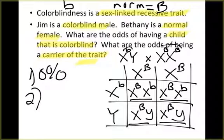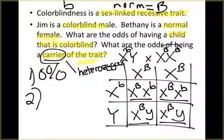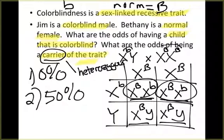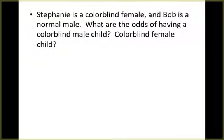What are the odds of being a carrier? A carrier means they are heterozygous. There are two heterozygous individuals — both females — giving a 50 percent chance of being a carrier. Both females will be carriers; no males will be carriers. Males cannot be carriers because they only have one allele, and that allele determines whether they have the trait or not. Females can be homozygous dominant, homozygous recessive, or heterozygous.